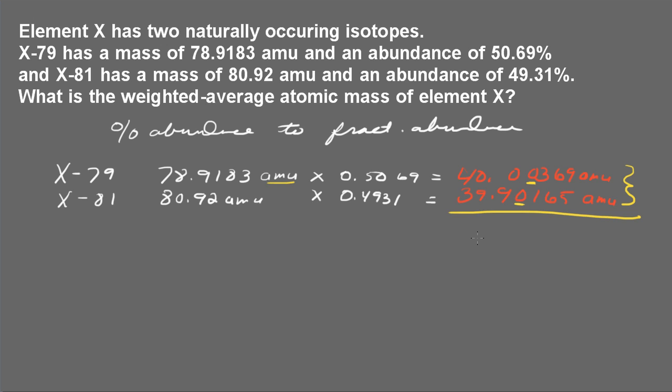And that means that now I'm going to add these. So that means that my answer can have no more than two digits beyond the decimal point. So let me go ahead and put this answer in. So I have 79.90 atomic mass units.